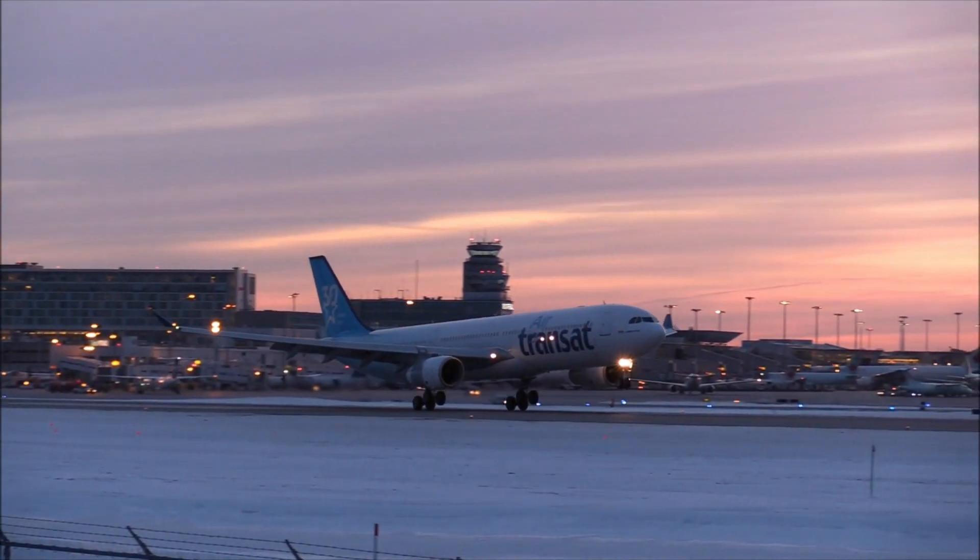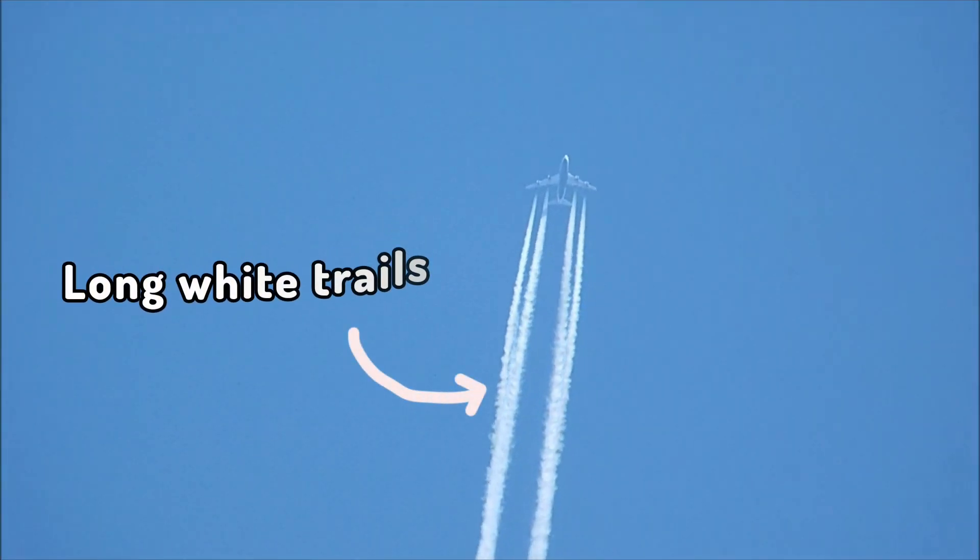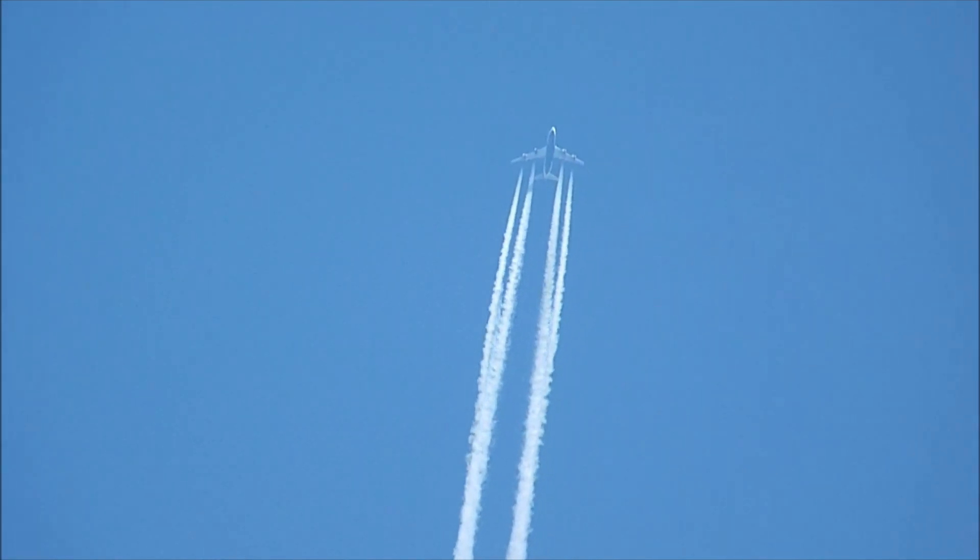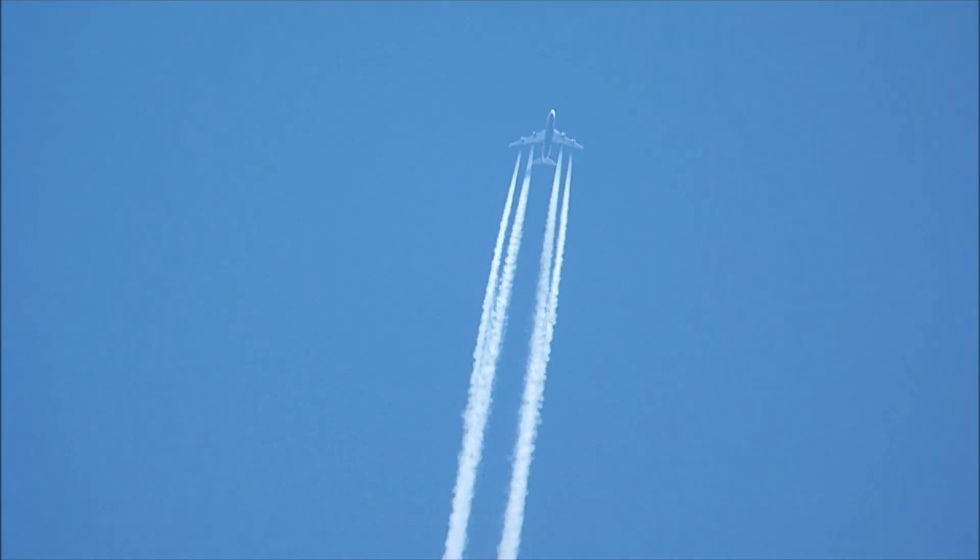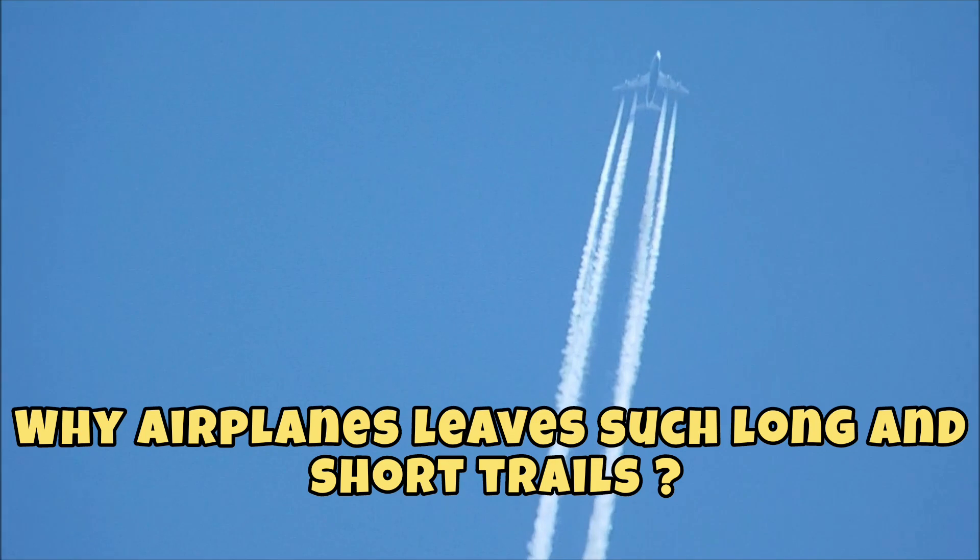When observing an airplane in the sky, one often notices a long white trail behind it. These trails vary in length, with some remaining for some time, while others vanish quickly. The question arises: why do airplanes leave such long and short trails?